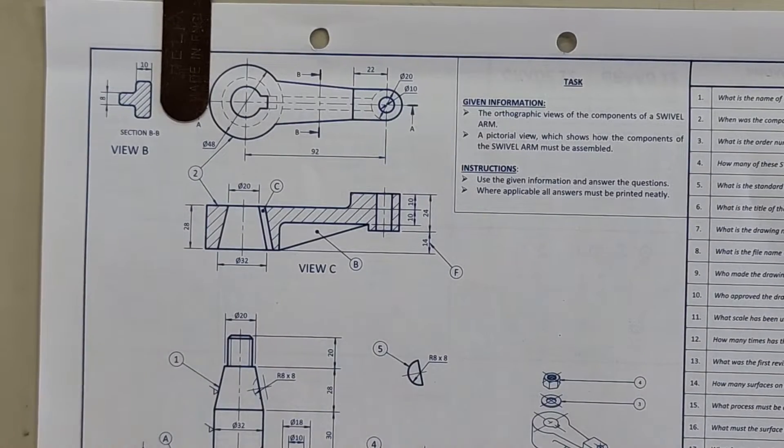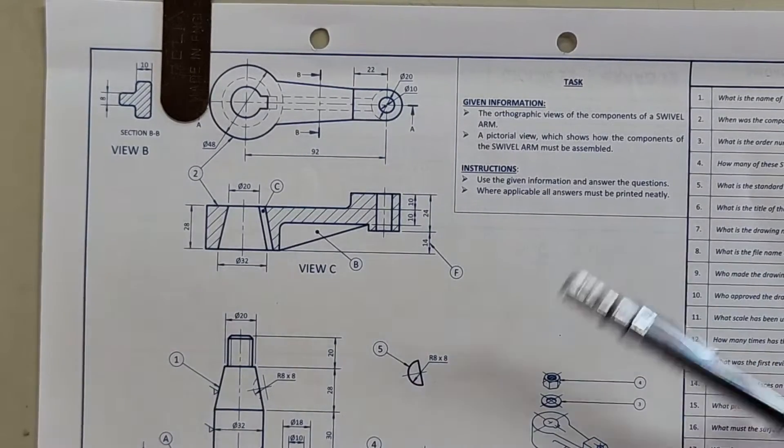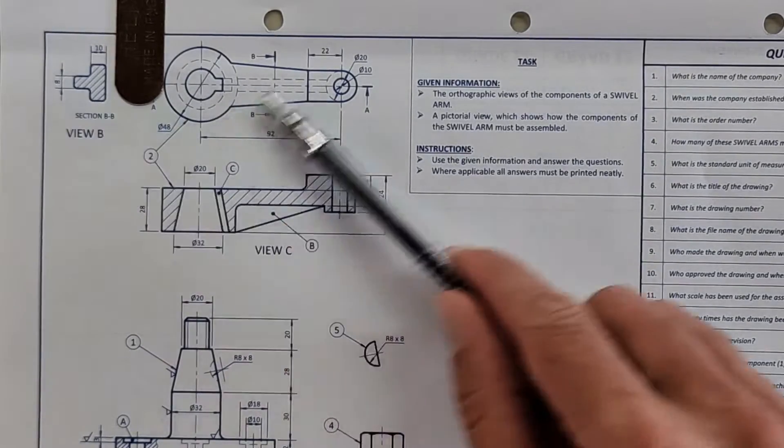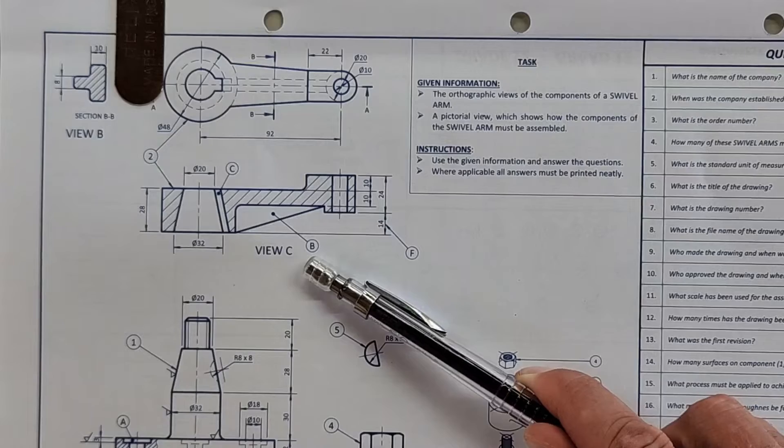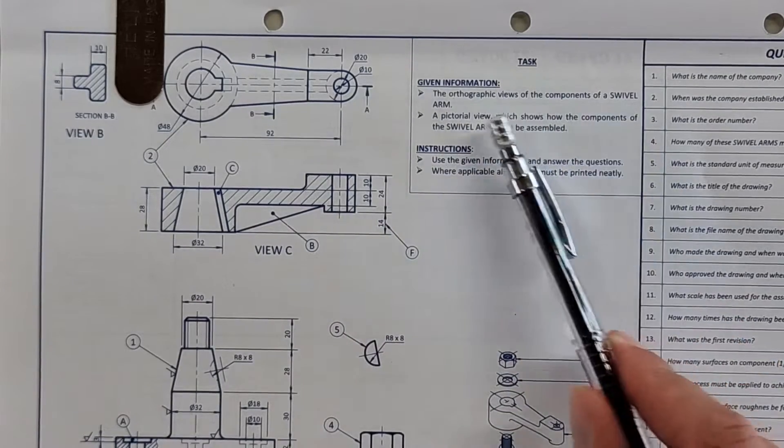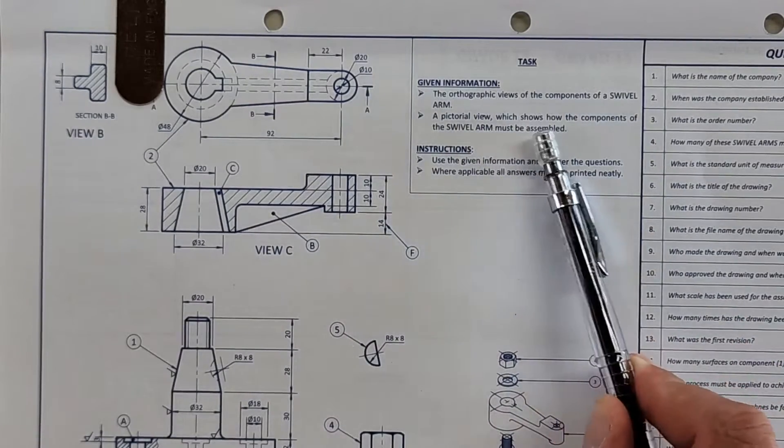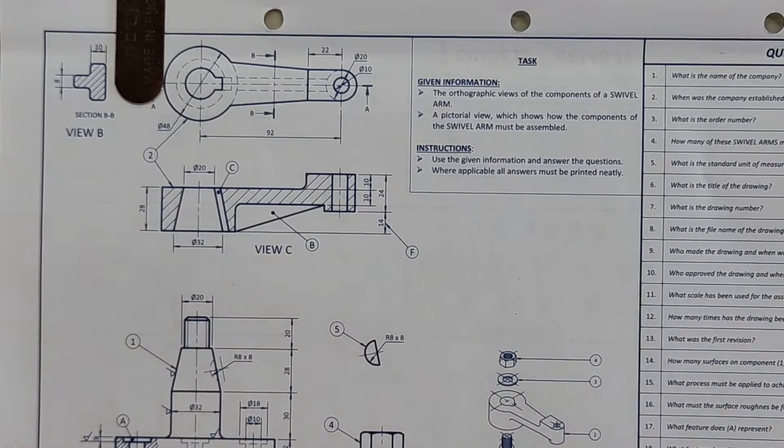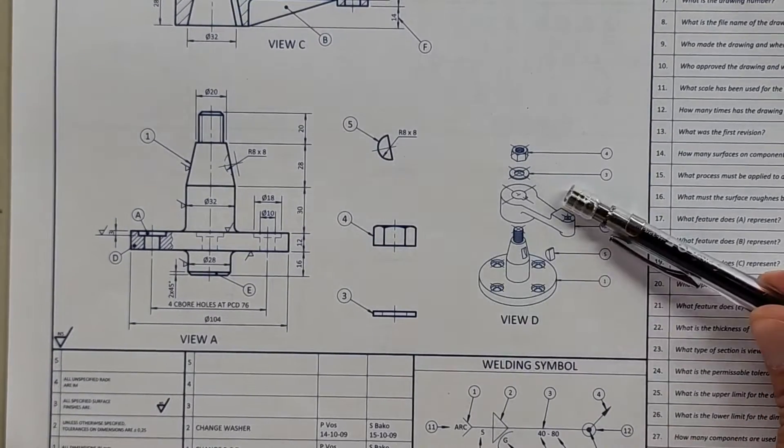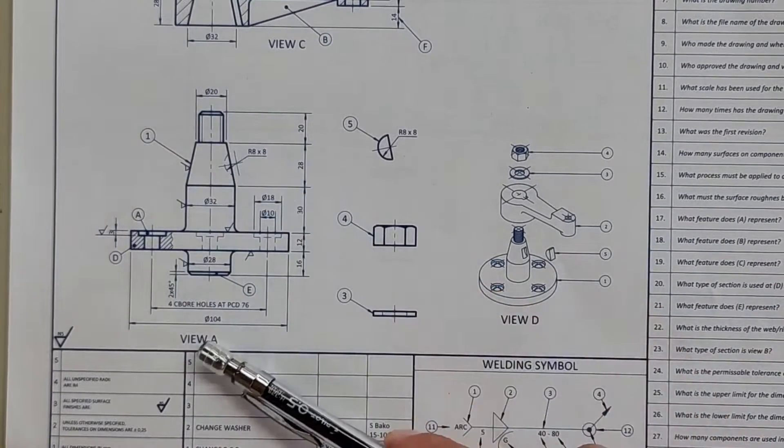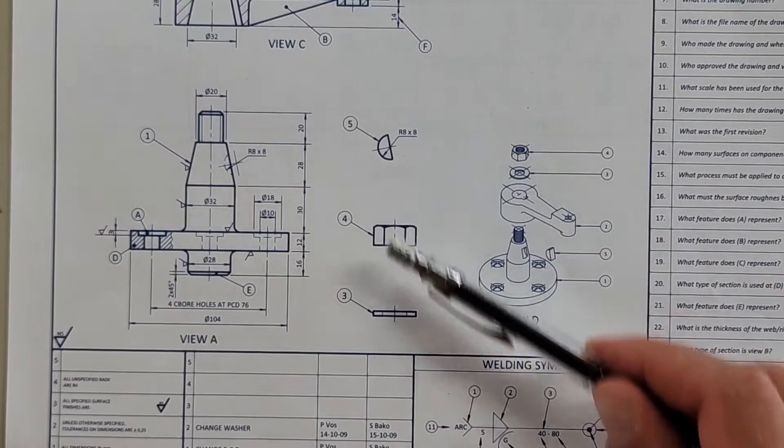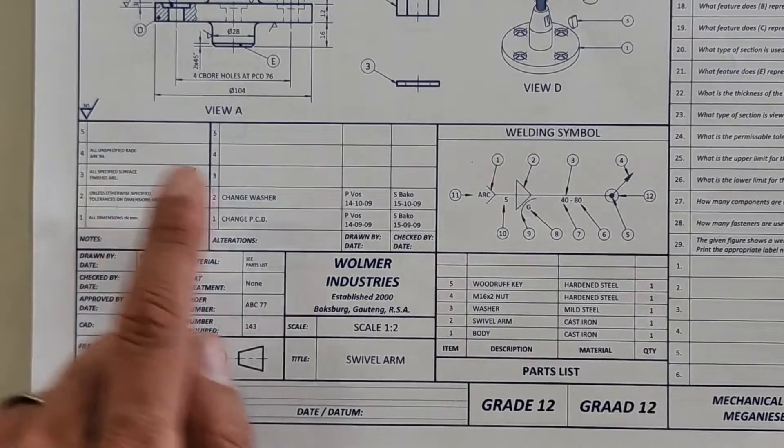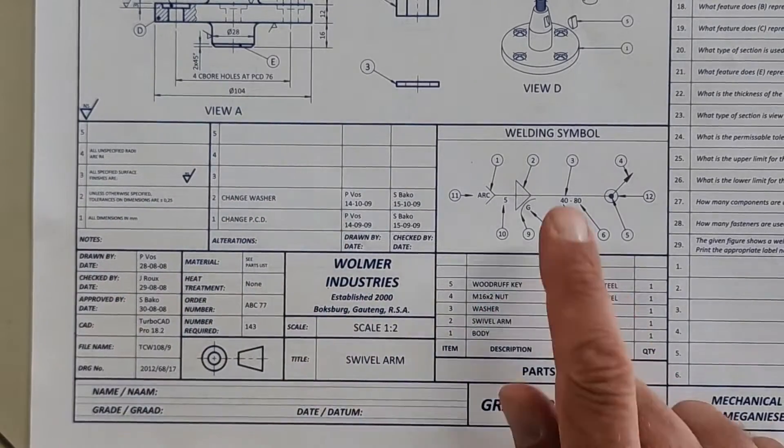Let's look at what is given to us here. I've actually not looked at this myself but we're going to try and talk this through quickly. We've got different views here labeled View C, the orthographic views of the components of a swivel arm, a pictorial view which shows the components of the swivel arm. There is an exploded view and then we have another view A. We've got different components highlighted here.